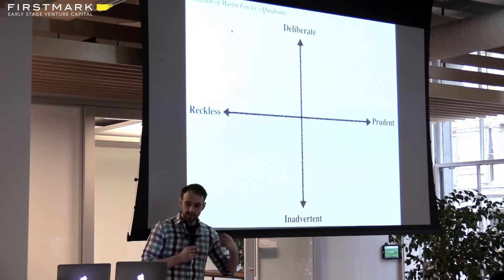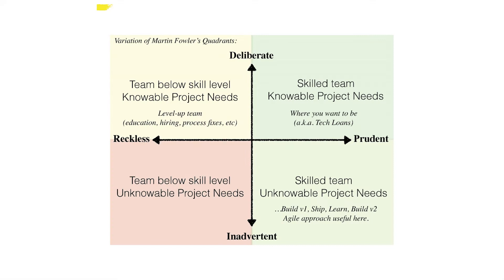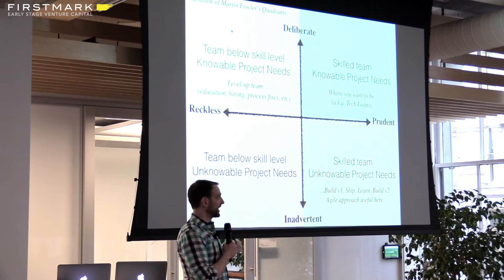Martin Fowler, software engineer and author, has a model with two different axes for technical debt: reckless versus prudent, and inadvertent versus deliberate. I colored it in with two attributes — how sophisticated is the team, and is the particular project knowable in some sense? In the ideal world, you'd be in the upper right corner: a team that really understands how to make good, prudent decisions, and can do it deliberately because they understand the environment. Maybe you're building a small ecommerce platform, something that's kind of been done before, as opposed to doing something nobody's done before.